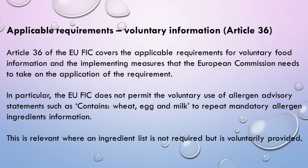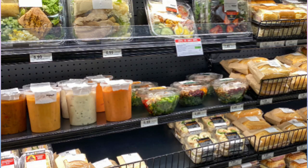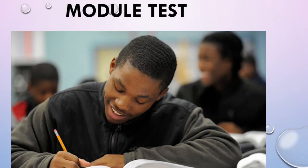Regarding voluntary information under Article 36 of the EU FIC, this covers the applicable requirements for voluntary food information and the implementing measures the European Commission needs to take on the application of those requirements. In particular, the EU FIC does not permit the voluntary use of allergen advisory statements such as 'contains wheat, egg, and milk' to repeat mandatory allergen ingredient information. This is relevant where an ingredient list is not required but is voluntarily provided.